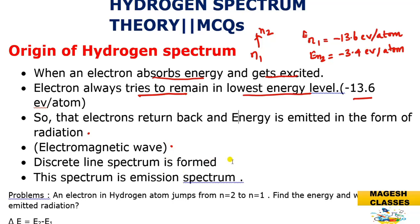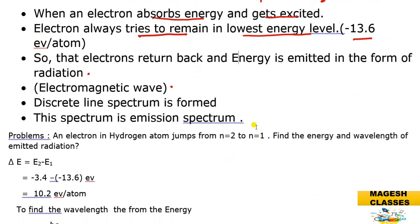The electrons return back and the energy is emitted in the form of electromagnetic radiation. This spectrum is the emission spectrum and it is also a line spectrum. Band spectrum and line spectrums are two types; hydrogen spectrum is a type of line spectrum and it is an emission spectrum.